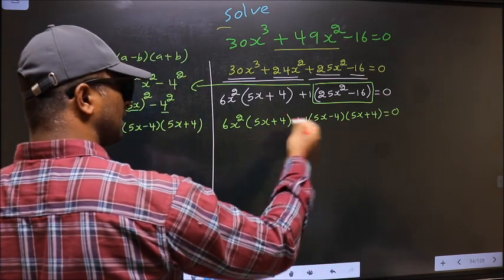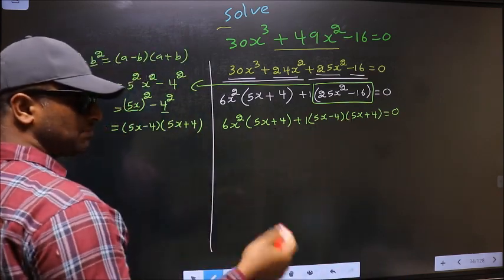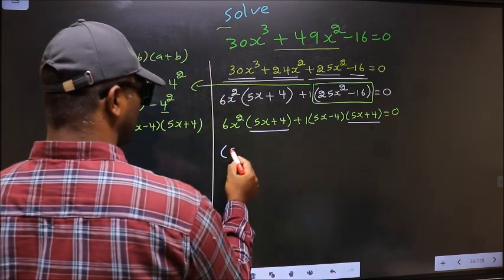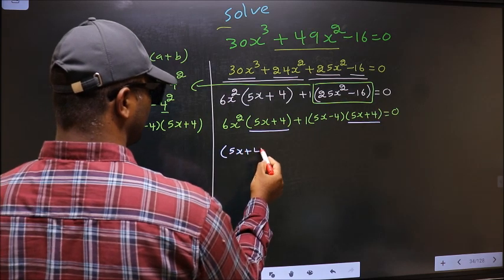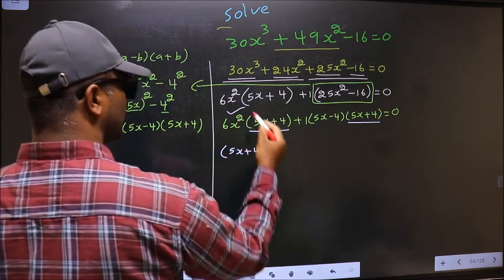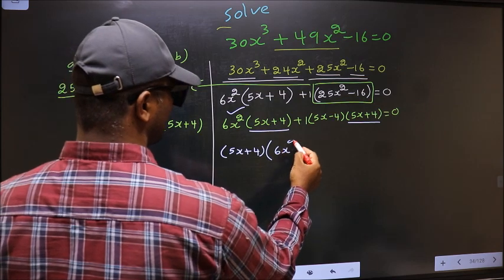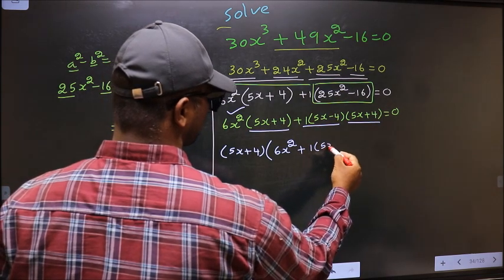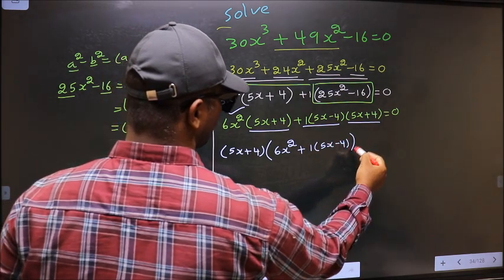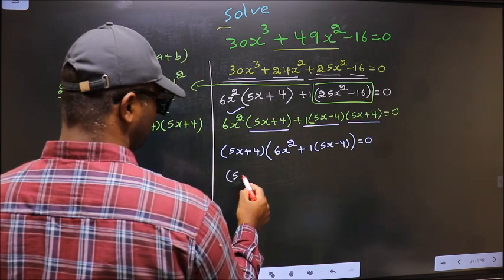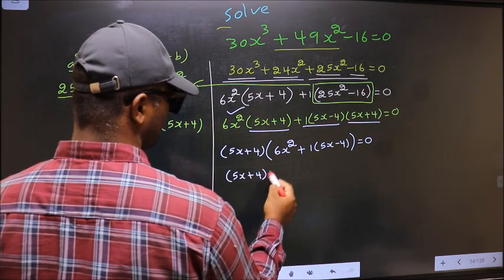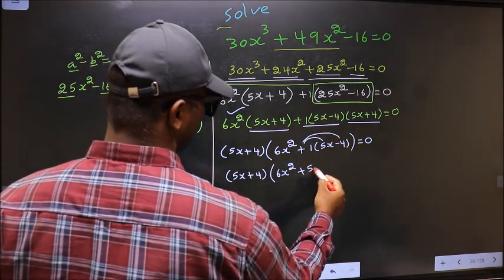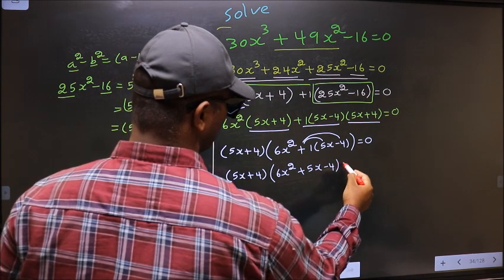From this entire equation, what can be taken out common is (5x + 4). So (5x + 4) goes outside, and inside we are left with 6x² + 1·(5x - 4) = 0. Opening up the brackets gives 6x² + 5x - 4 = 0.